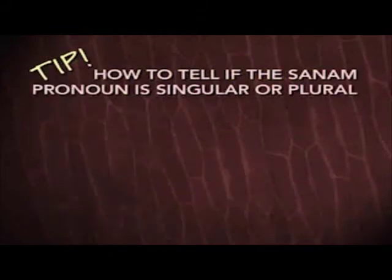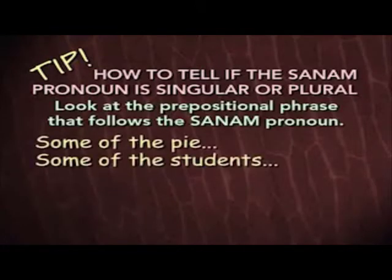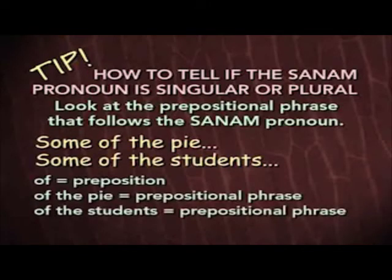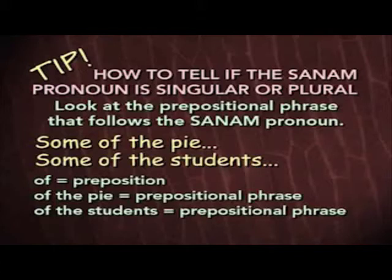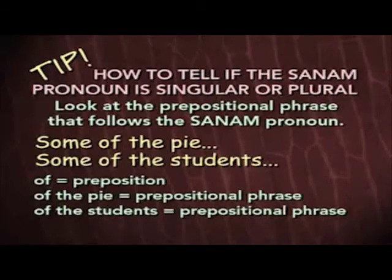Here's a tip that will help you tell whether the SANAM pronoun is singular or plural in a particular sentence. The SANAM pronoun is usually followed by a prepositional phrase. In both of these sentences, the prepositional phrase begins with the preposition 'of' — 'of the pie,' 'of the students.' Look at the object of the prepositional phrase — that will provide a clue. If the object of the prepositional phrase is singular, then the SANAM pronoun is singular. If the object is plural, then the SANAM pronoun is also plural. That's why 'some of the pie' is singular, because 'pie' is singular, whereas 'some of the students' is plural, because 'students' is plural.